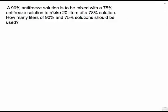This says a 90% antifreeze solution is to be mixed with a 75% antifreeze solution to make 20 liters of a 78% solution. At that point you're just totally lost and you quit and go to the next problem. But it's not so bad because we're going to use this thing called the Beaker setup. And there's the beakers because we're going to put our antifreeze in the beaker.